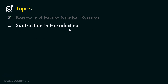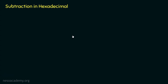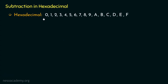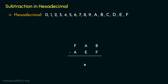Let's now focus on the subtraction in hexadecimal. In hexadecimal, we already know we have 16 symbols starting from 0 to F. We are going to take the minuend as FAB and the subtrahend as AEF. Both are valid 3-digit hexadecimal numbers. Let's have the place values, and consider the first unit.